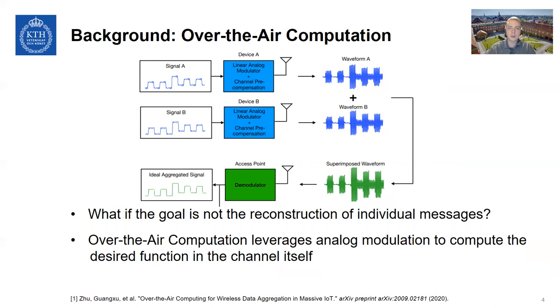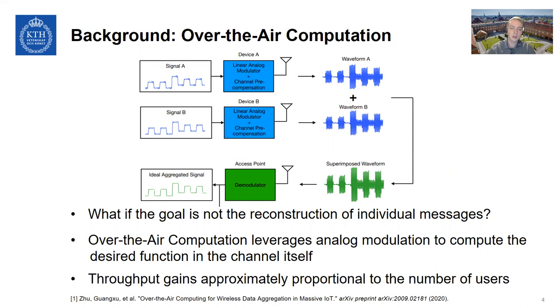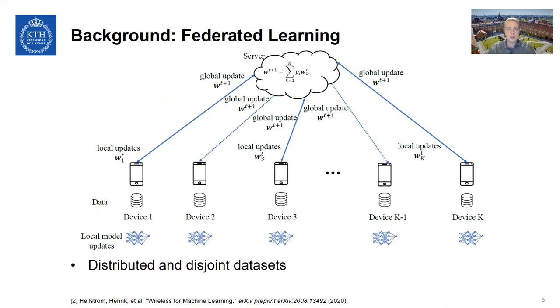And it has been shown that if you modulate the transmitted signals in a certain way, then by combining them in the air, you can actually compute the signal there rather than computing it at the receiver computer. And given that there is some sort of matching structure in the wireless channel and the desired function that you want to compute, you can achieve throughput gains that are approximately proportional to the number of users in the network. And this can be a very large number. I mean, even for just 10 devices, you will be seeing approximately an order of magnitude gain in throughput.